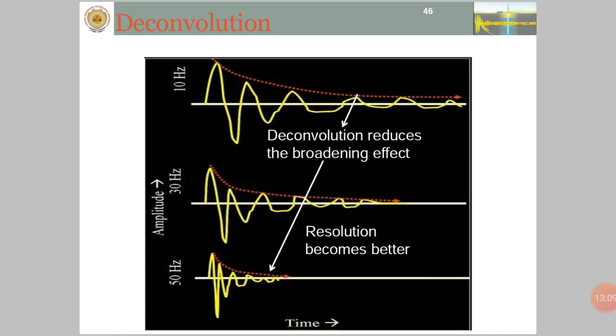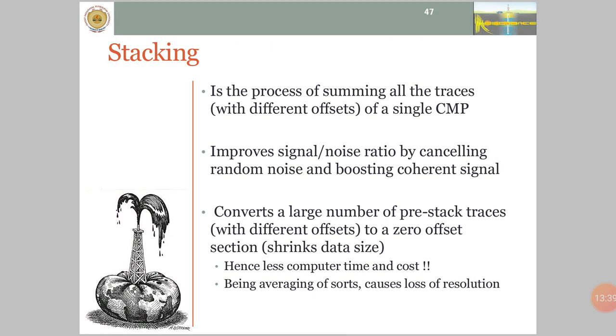Ideally, deconvolution should compress the wavelet components and eliminate multiples, leaving only earth's reflectivity in the seismic trace. Wavelet compression can be done using an inverse filter as a deconvolution operator. An inverse filter, when convolved with seismic wavelet, converts it into a spike. When applied to a seismogram, the inverse filter yields the earth's impulse response. An accurate inverse filter is achieved using least square method. The fundamental assumption underlying the deconvolution process is that minimum phase data is required. The issue is dealt with also in inverse filtering.